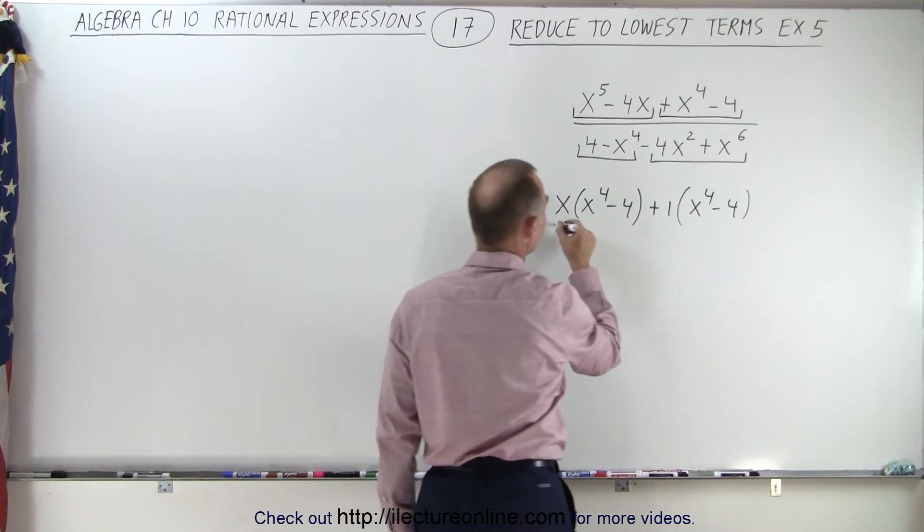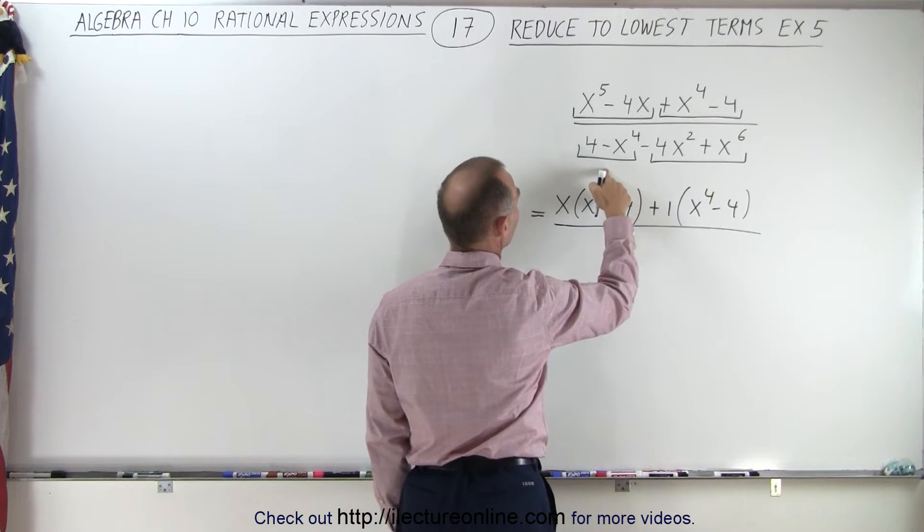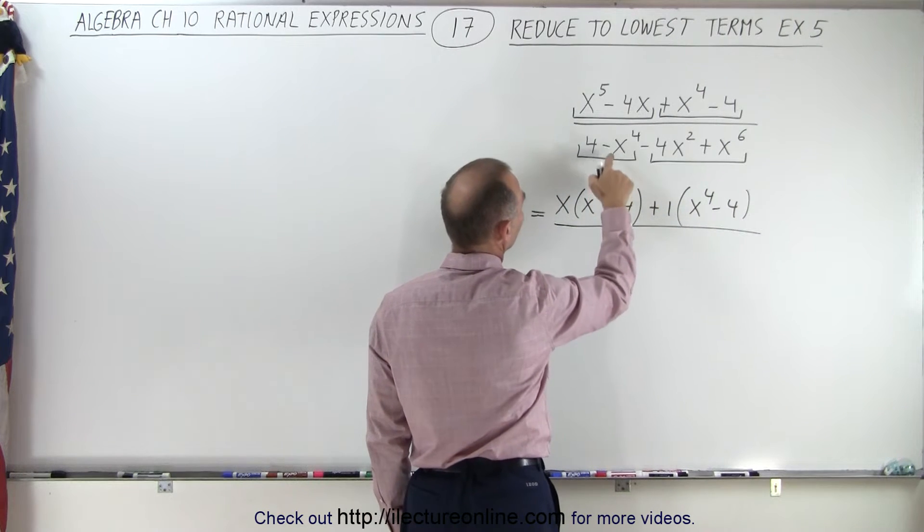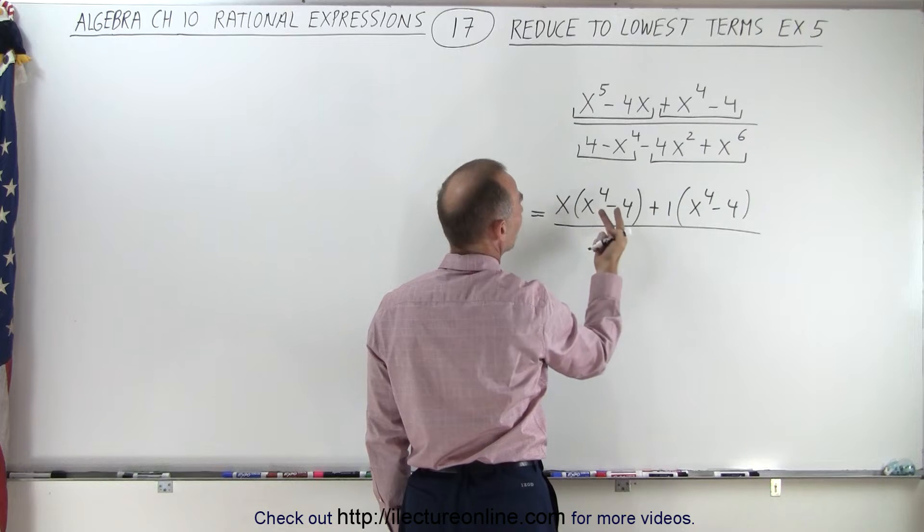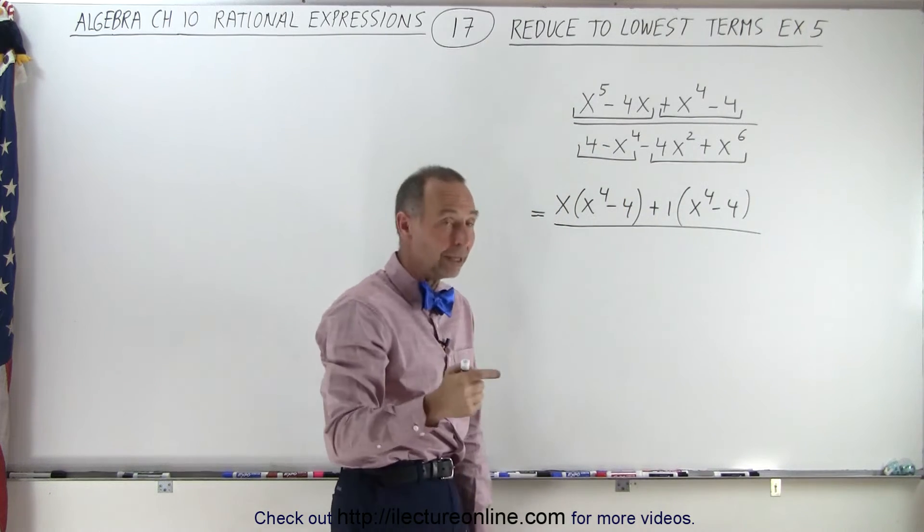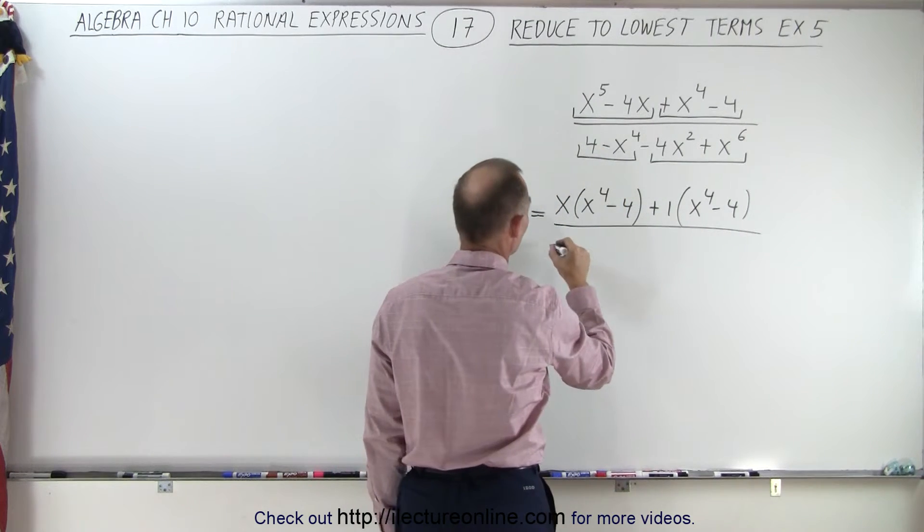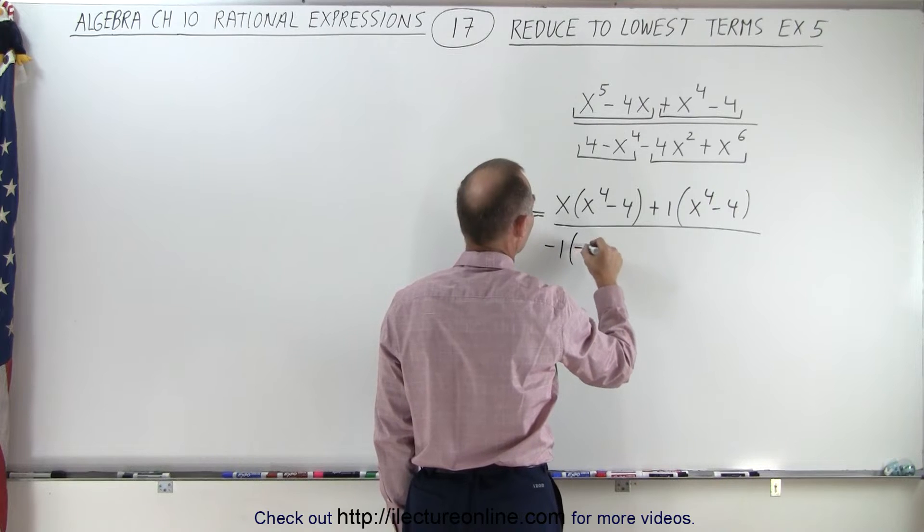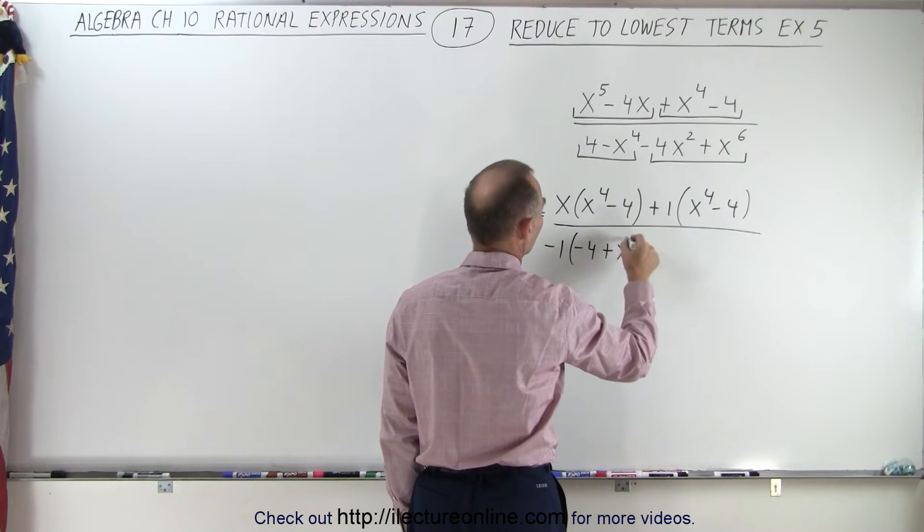In the denominator, here we can factor out... notice that this looks the same, but it's in reverse, so we factor out a negative one to make it look exactly the same. So negative one times negative four plus x to the fourth, and now we can turn those terms around.